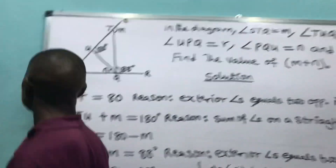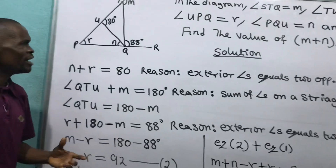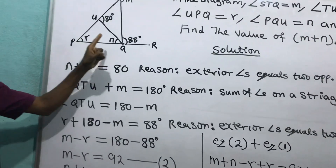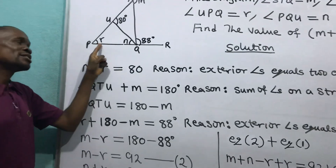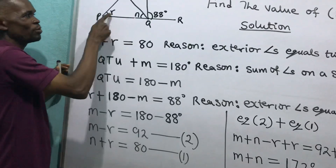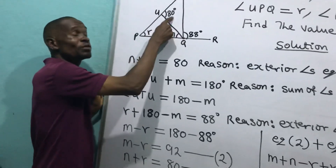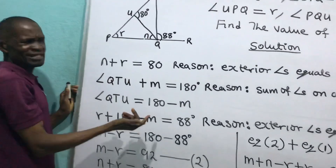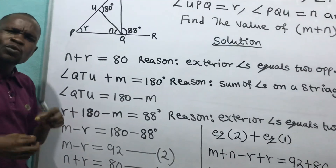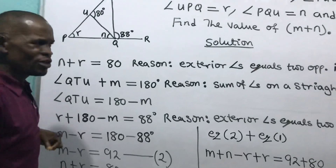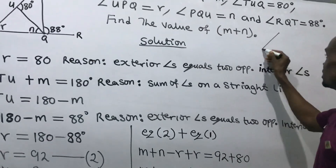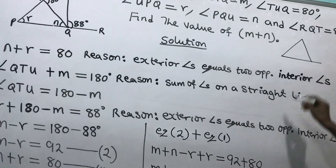Solution. Let's go to the solution. I'm starting with saying that N plus R equals to 80. The reason: the sum of opposite interior angles equals to the exterior angle.